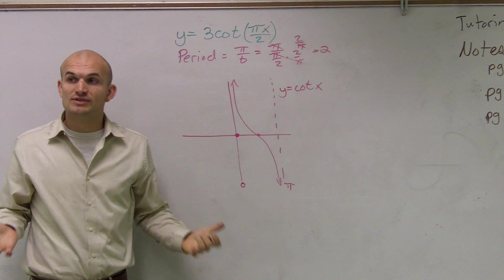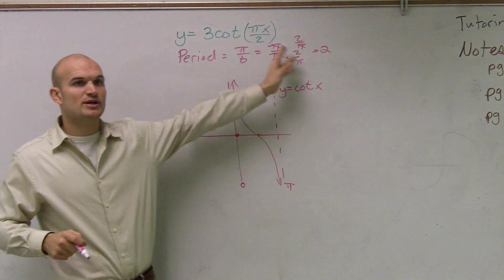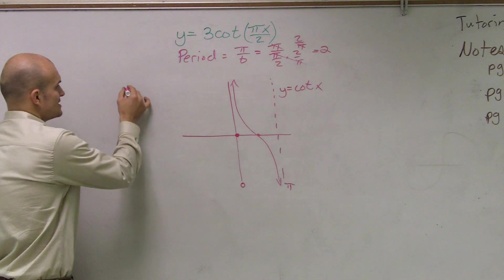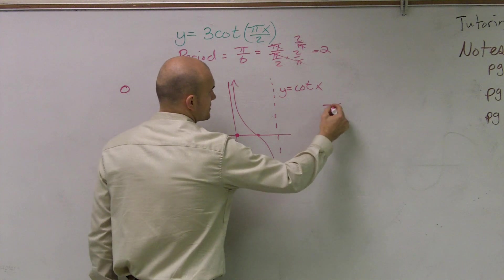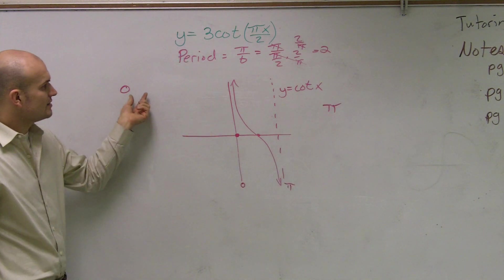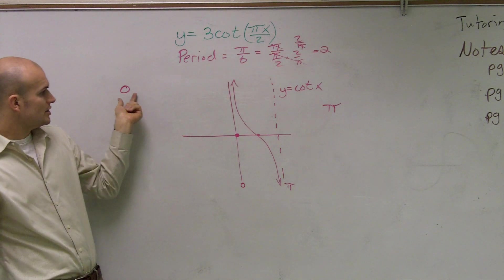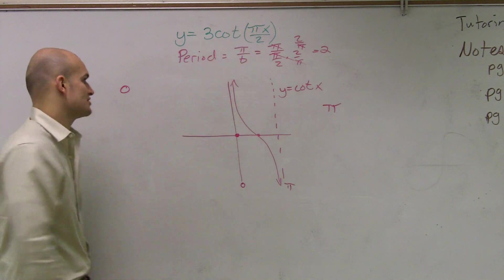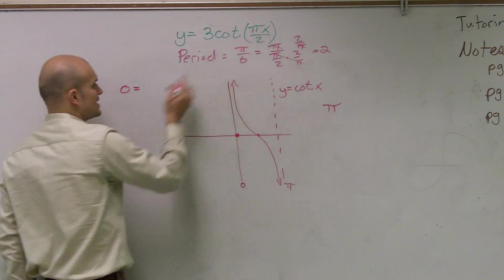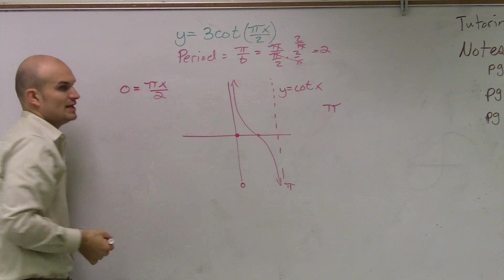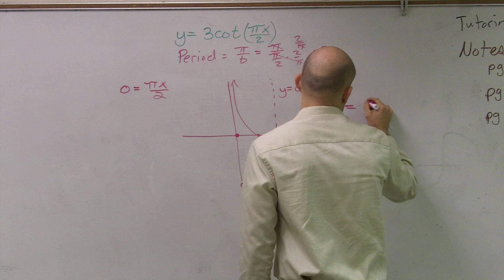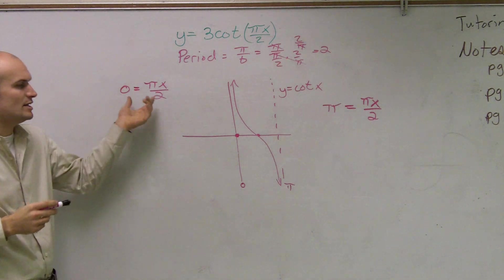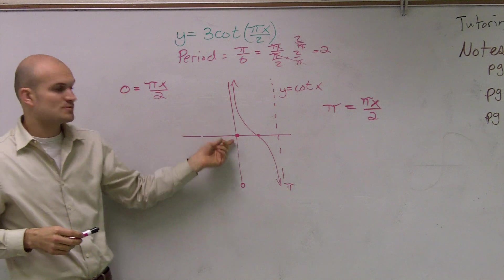So all we want to do is we want to find out what is our new period, which is 2. Then we want to find out what are our new asymptotes going to be. Right now, currently, our asymptotes are at 0 and pi. So originally these were your values of x. Your asymptotes were at x where 0 was your x value and pi was your x value. Well, how did our x values change? Now they're being multiplied by pi and divided by 2. So all I want you to do is take whatever's inside your function and put that equal to what your two asymptotes are. So for cotangent, your asymptotes are at 0 and at pi.